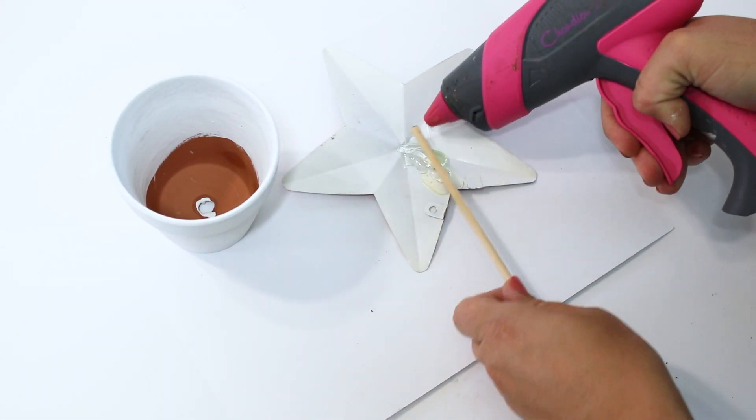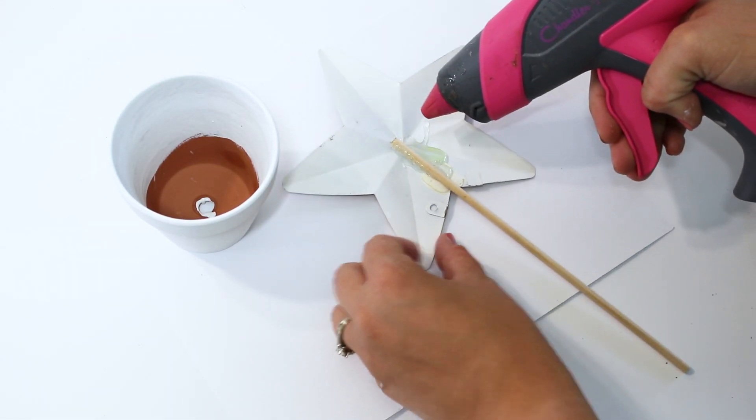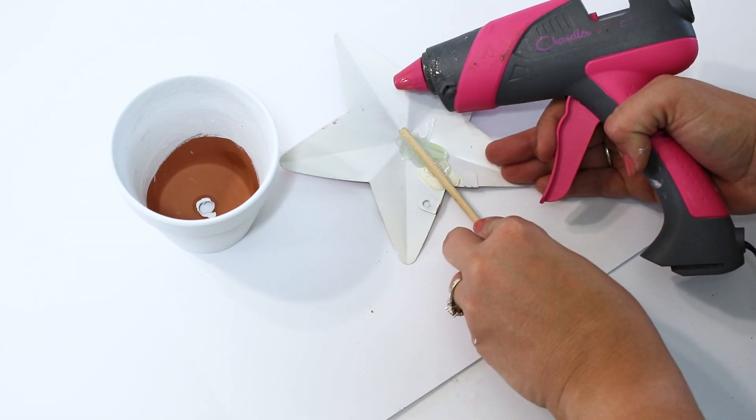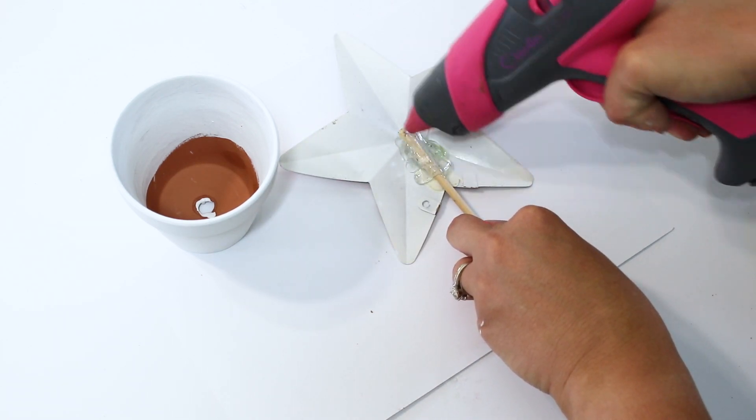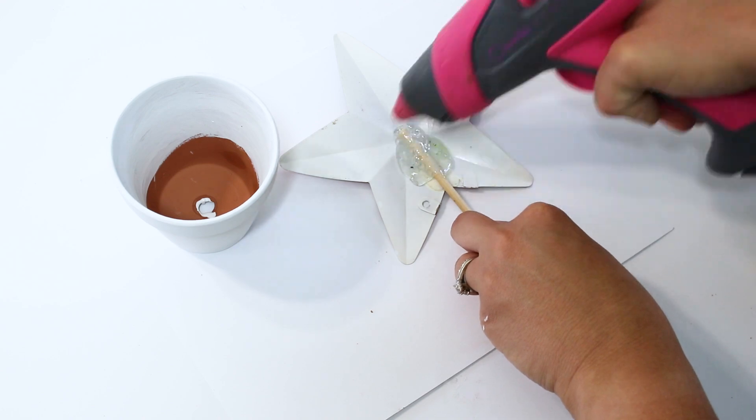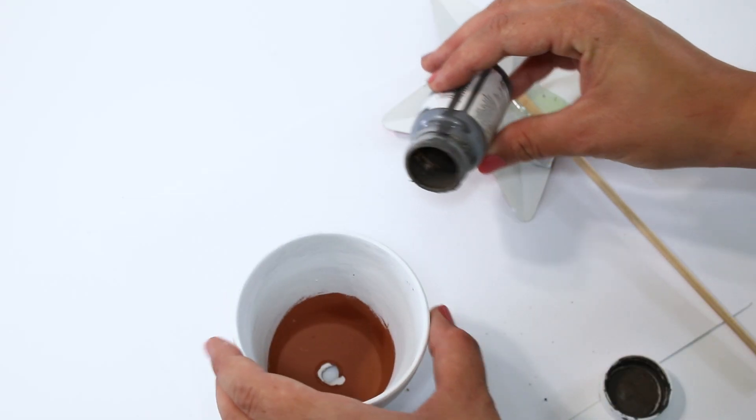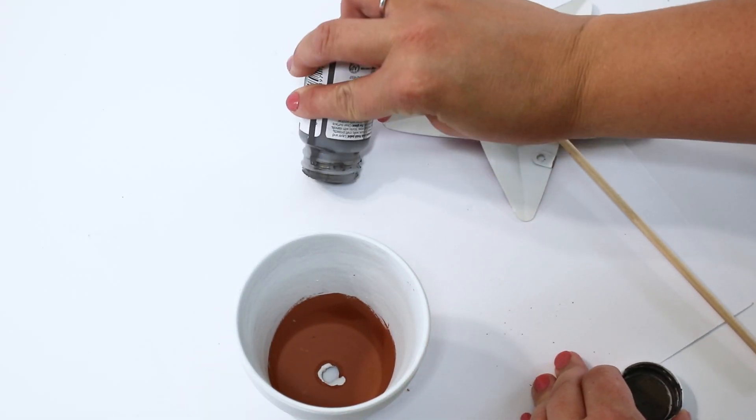Since the star does cave in in the center, you do kind of have to build up the hot glue to get it to stick to the dowel rod. After I laid the dowel rod into the hot glue, I just covered it with a ton of hot glue. And once it dried, it just held really nicely.